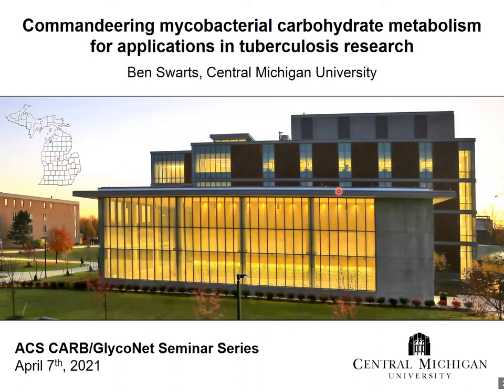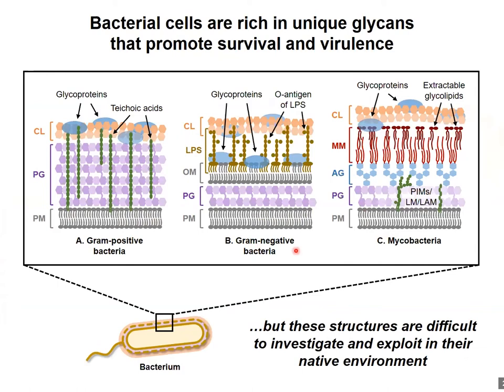All bacteria, including gram-positive and gram-negative bacteria, as well as mycobacteria, which I'll be focusing on today, have cell envelopes that are rich in glycoconjugates and polysaccharides, which have important roles in bacterial physiology and pathogenesis. They're involved in determining cell shape, providing structural integrity, and defense against external stresses, including antibiotic treatment. And because many of these molecules are surface-exposed, they may also be involved in host-pathogen interactions.